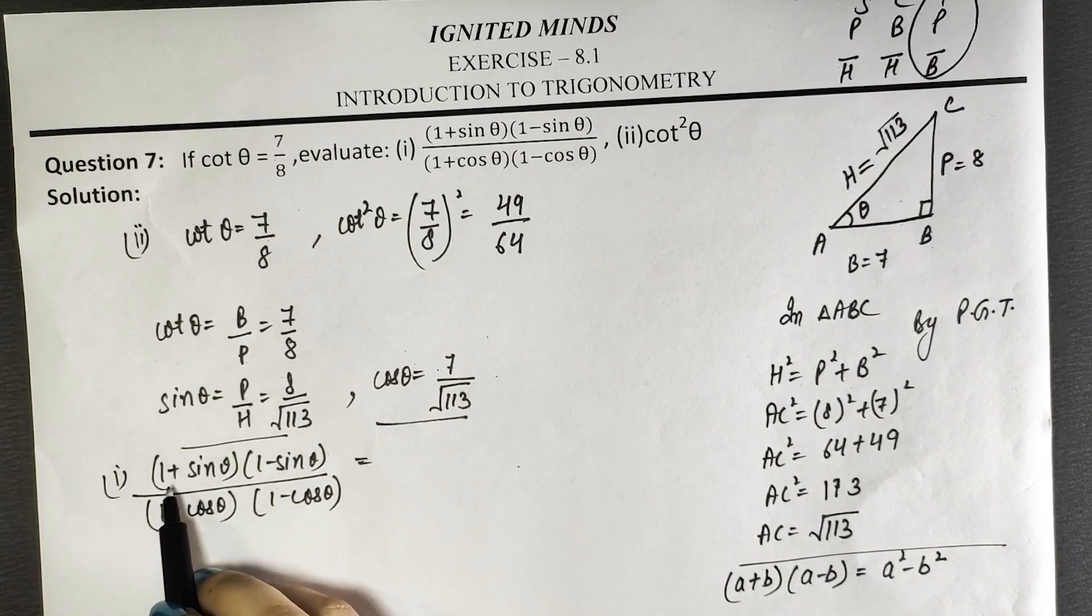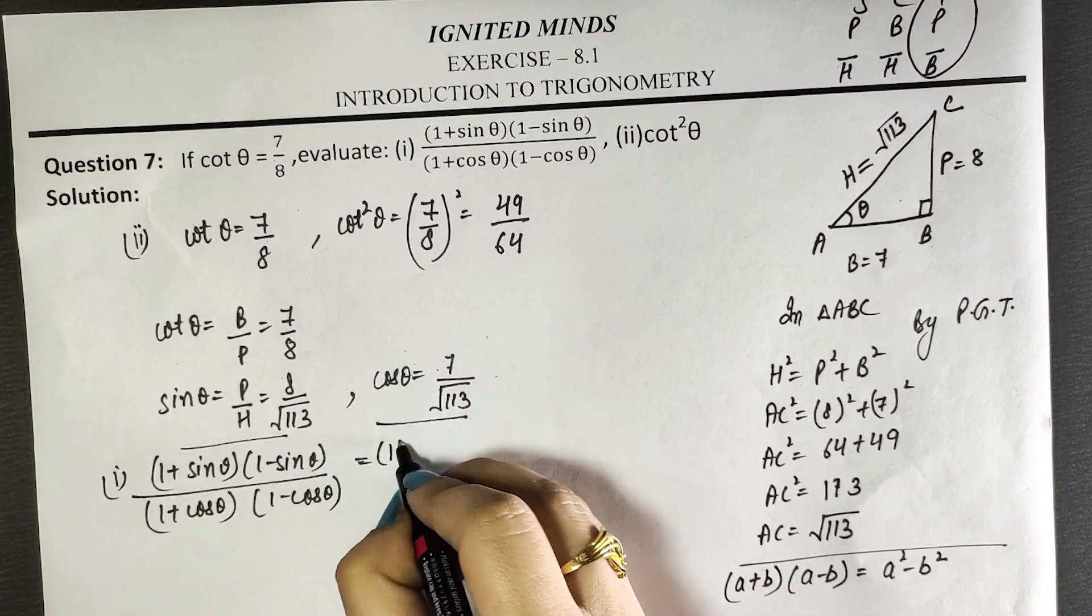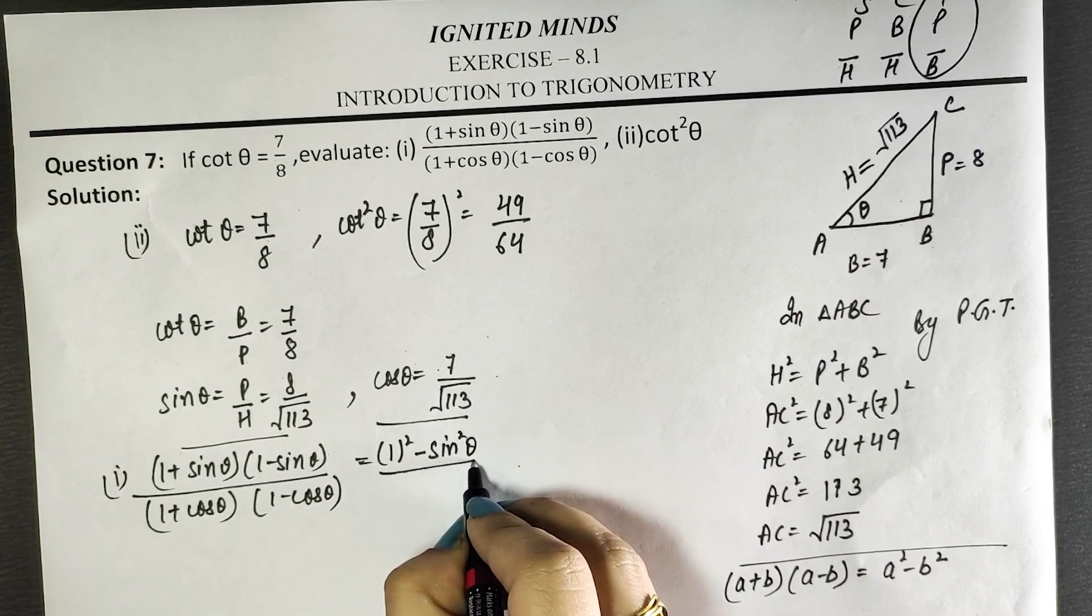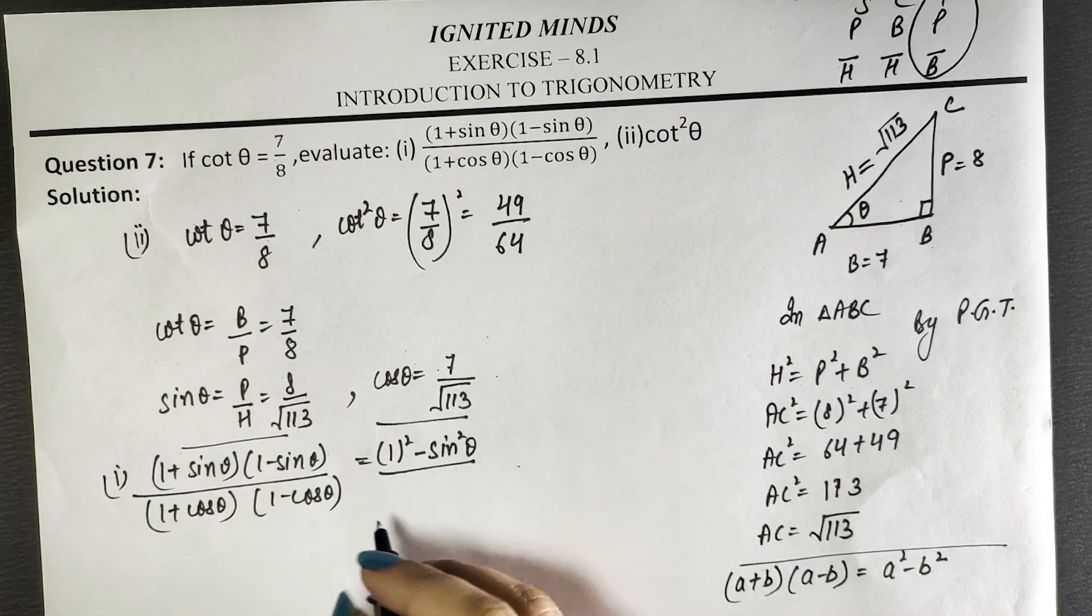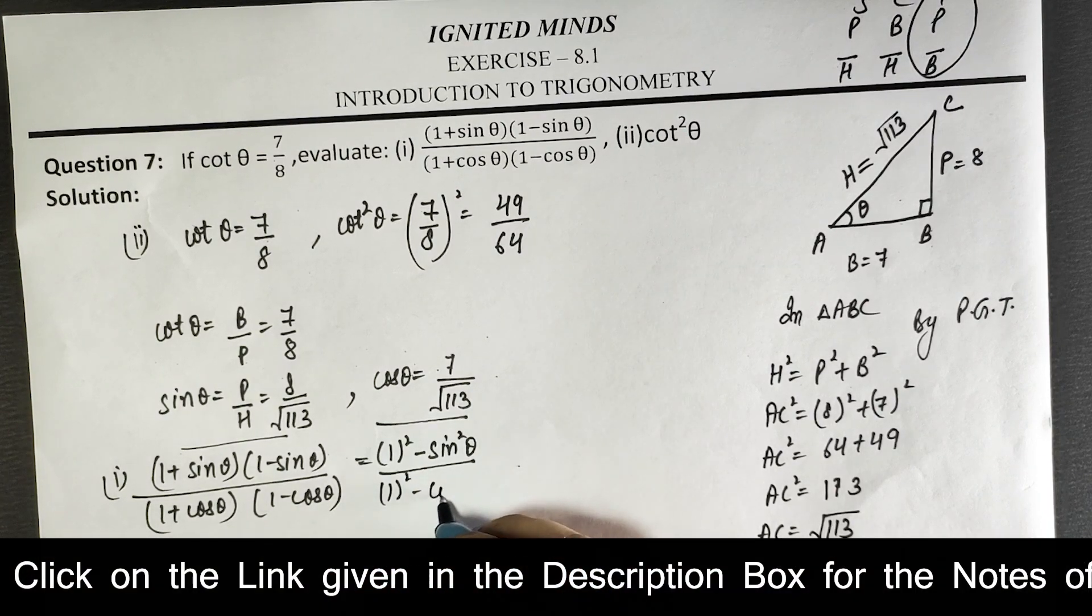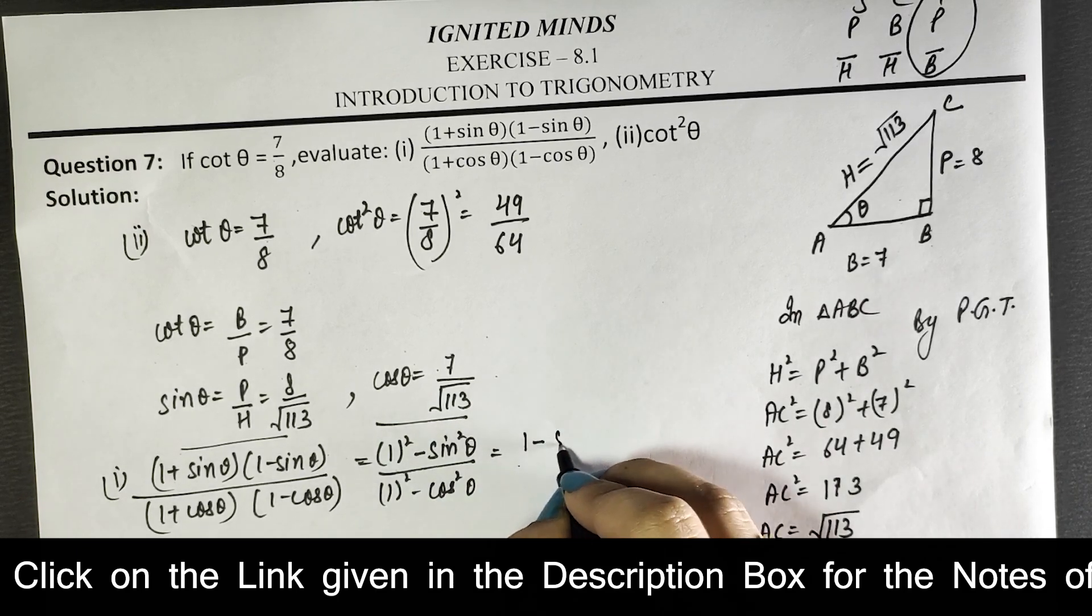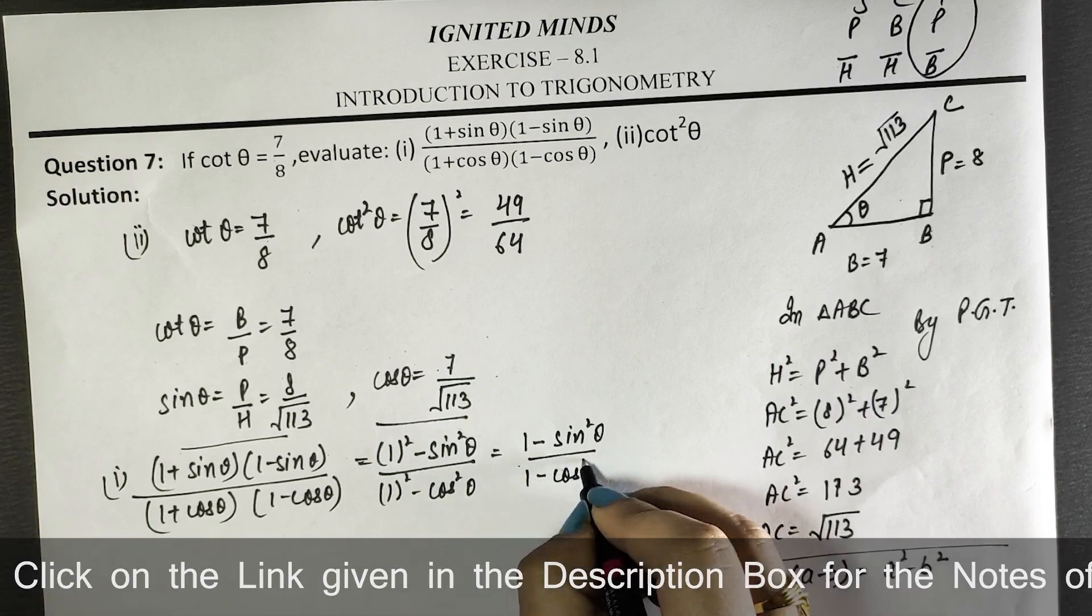Here a is 1, b is sin θ. This becomes 1 squared minus sin squared θ divided by the same (a plus b)(a minus b), where a is 1 and b is cos θ. This is 1 minus sin squared θ divided by 1 minus cos squared θ.